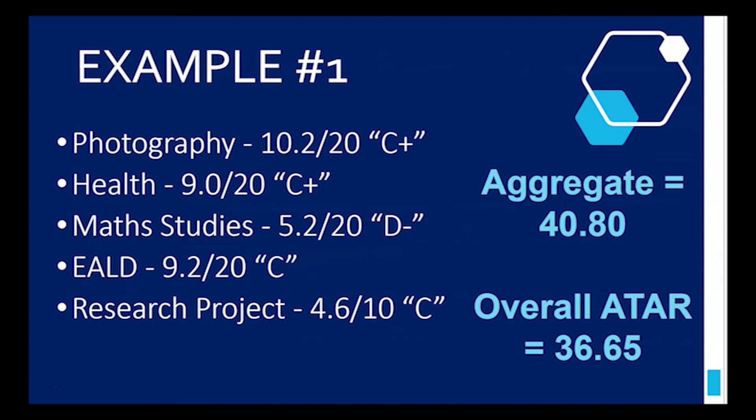So here's an example. We've got our student who did photography, health, math studies, EALD and research project. You can see their grades there: C+, C+, a D- for math studies - struggled with that one a bit, C for EALD and a C for research project. This student has got their SACE. If we add up these scores out of 20, we end up with an aggregate of 40.8.